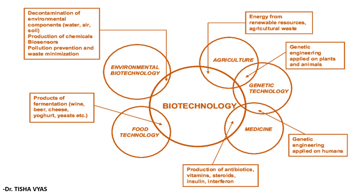Another field is agricultural biotechnology. It is the use of technology like genetic engineering, molecular markers and tissue culture to modify and increase the disease resistance efficiency of plants. The best example is Bt cotton. The next, genetic technology — also known as genetic engineering — is the method of direct manipulation of an organism's genes. A new DNA can be inserted randomly or targeted to a specific part of the genome.